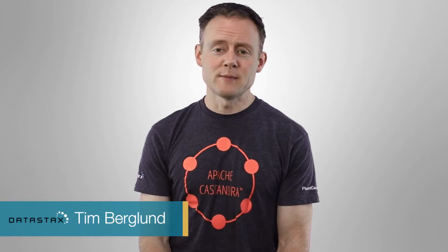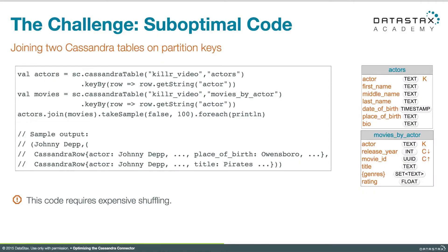Cassandra itself famously doesn't support joins, and one of the great things about bringing Spark into the picture is that now we have a join transformation. We can take two RDDs we've created from separate Cassandra queries and join them together just like we're used to. In this example, we can see that being done suboptimally — and just like all of our suboptimal examples, it really seems pretty sensible.